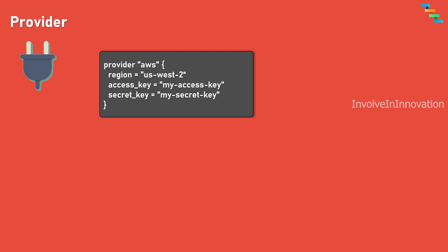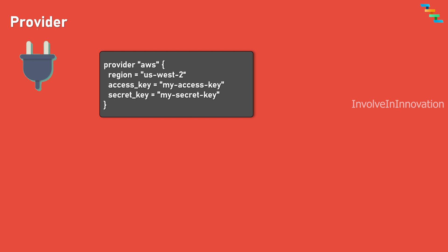In addition to providers officially supported by HashiCorp, the creator of Terraform, there is a vibrant ecosystem of third-party providers created and maintained by the community. These providers extend Terraform support to additional infrastructure platforms, cloud providers, and services that may not be natively supported. You need to specify them in the Terraform block under required_providers source. For example, to create AWS cloud infrastructure as a provider, create a provider block for AWS and specify the region and optionally the access key and secret key.